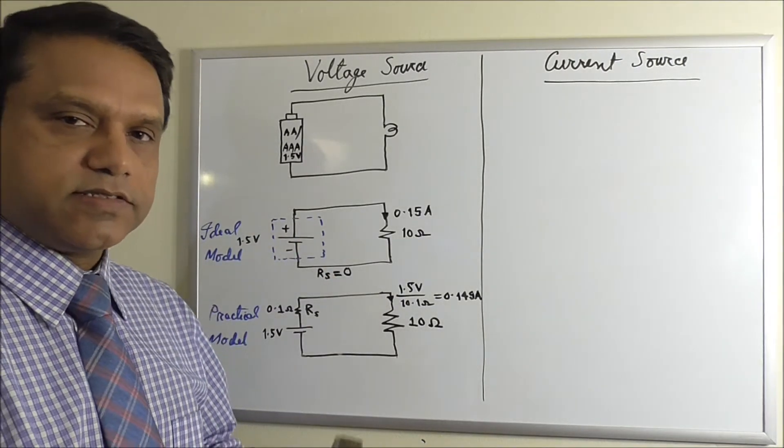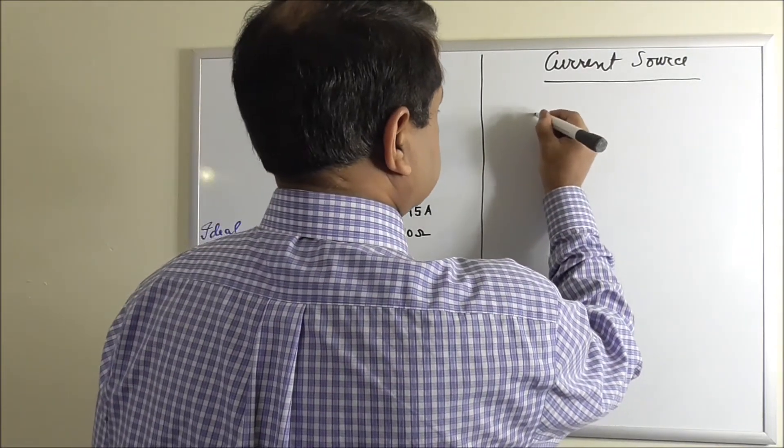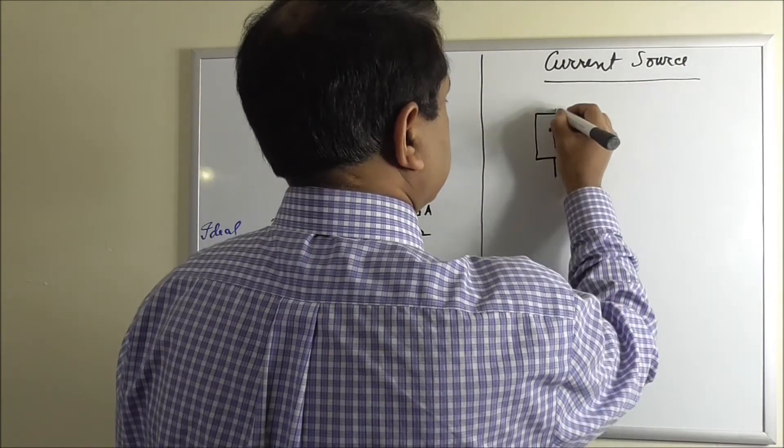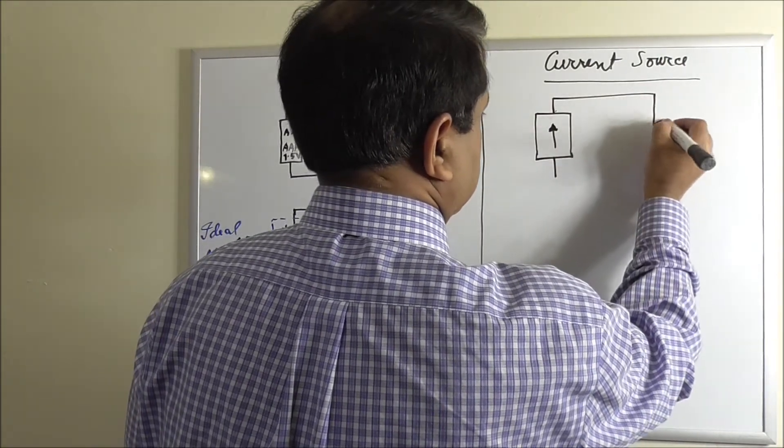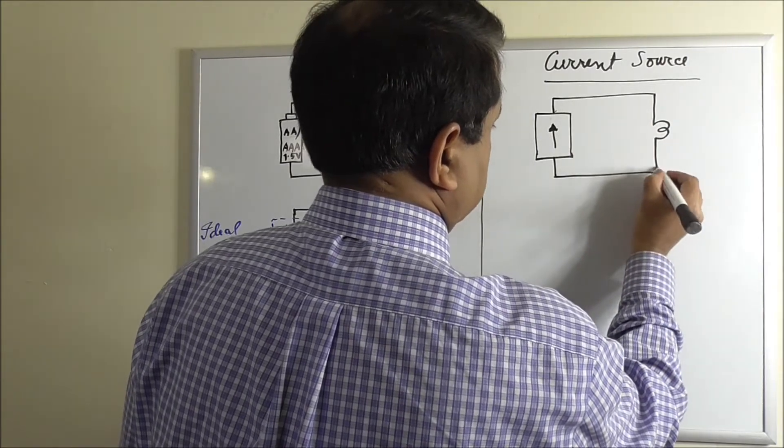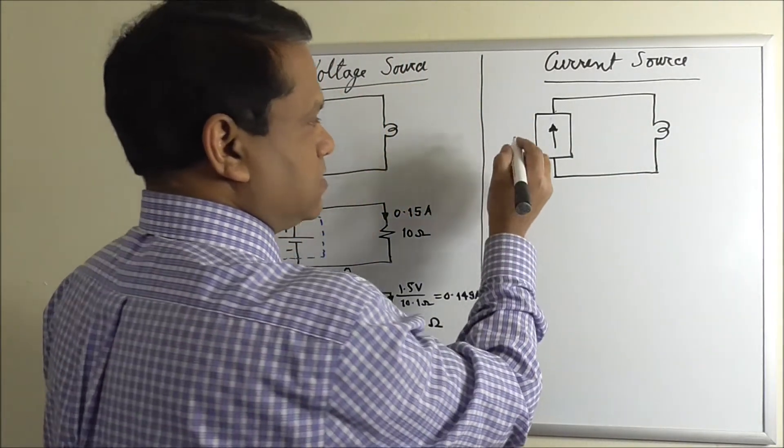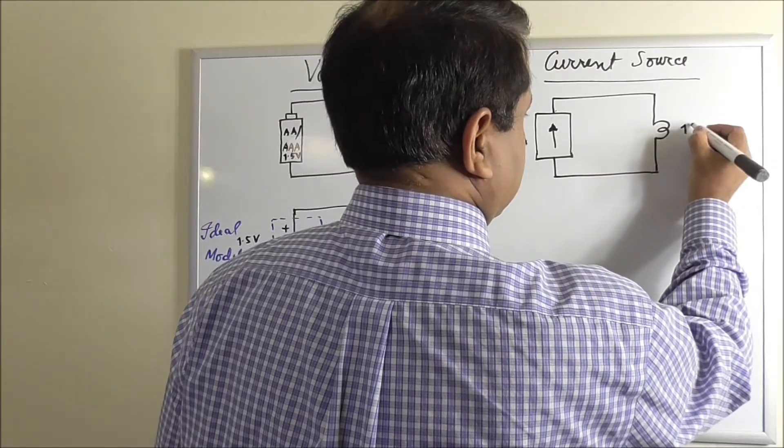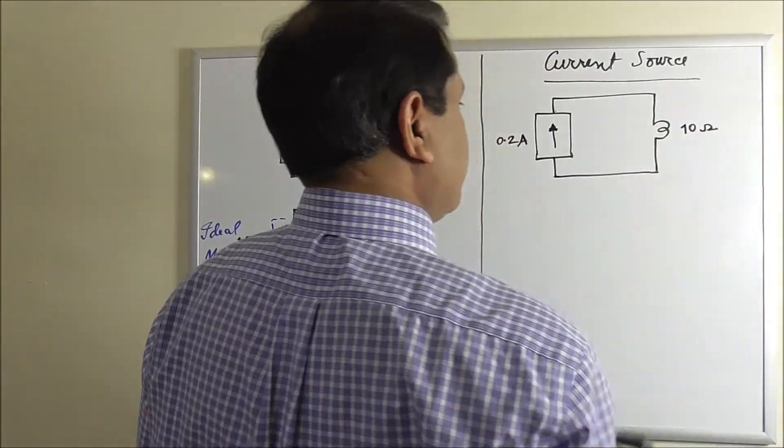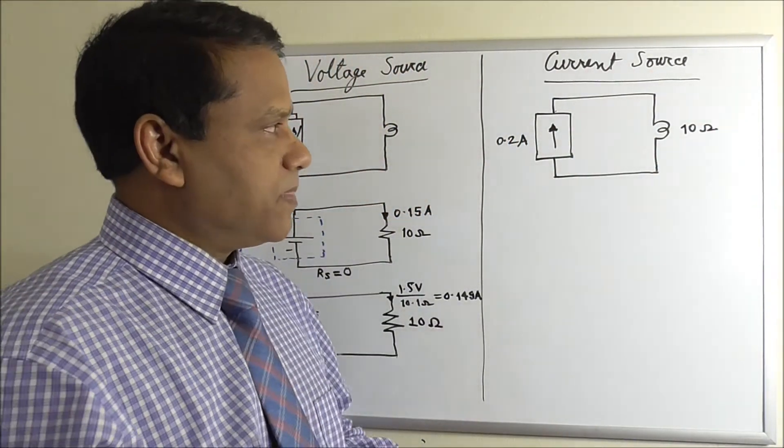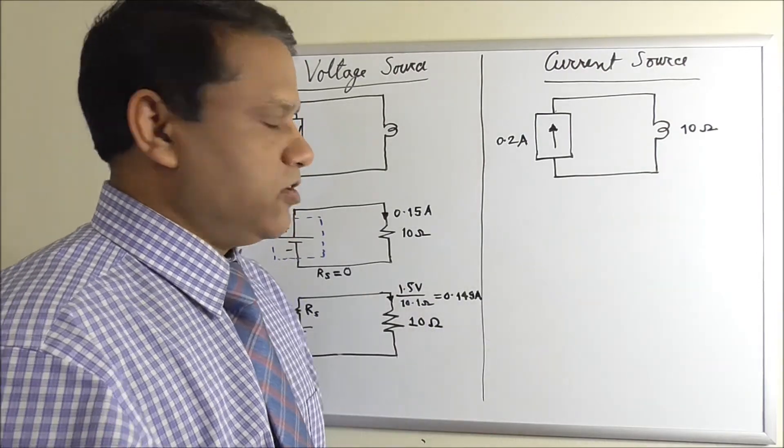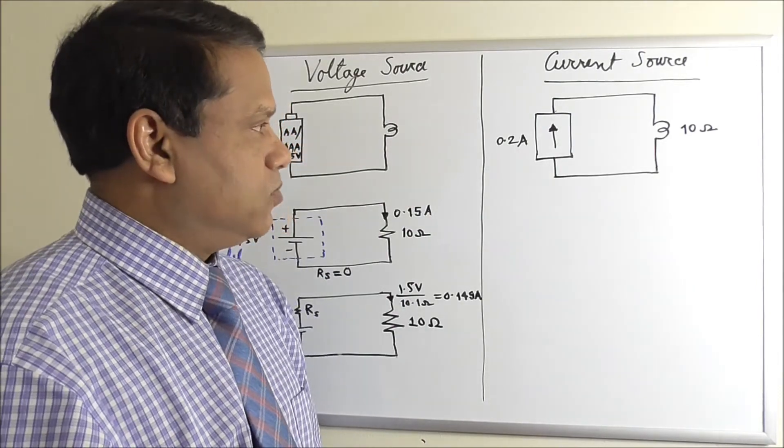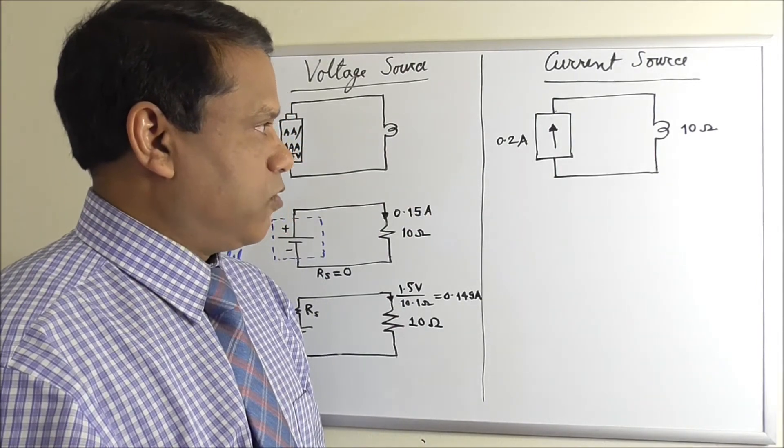Similarly, we can discuss current source. Let's say this is the current source. Let's say the value of the current source is 0.2 ampere, and this is still 10 ohm. So the bulb will light up and it will consume power. You can find by I square R is 0.2 square times 10 ohm. It will be 0.4 watt.